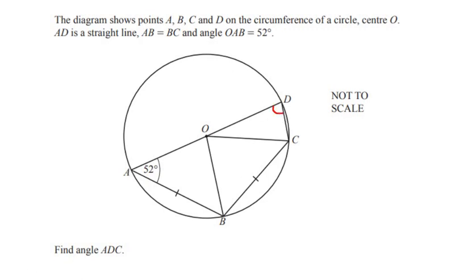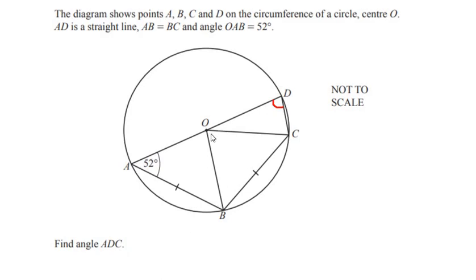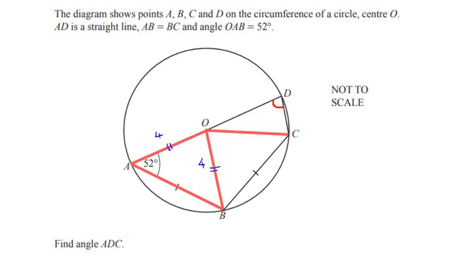Let us start with the triangle which has the maximum information. We can see that triangle OAB has an angle of 52 degrees. Side OA is equal to side OB because both are the radius of the circle — so if OA is 4 cm, then OB is also 4 cm. The same applies to OC and OD, as they are also radii of the circle.